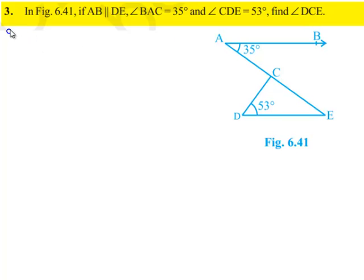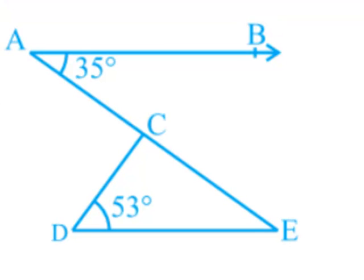Now moving on to the solution, here we are given that AB is parallel to DE, angle BAC is equal to 35 degrees, and angle CDE is equal to 53 degrees. We are asked to find angle DCE.